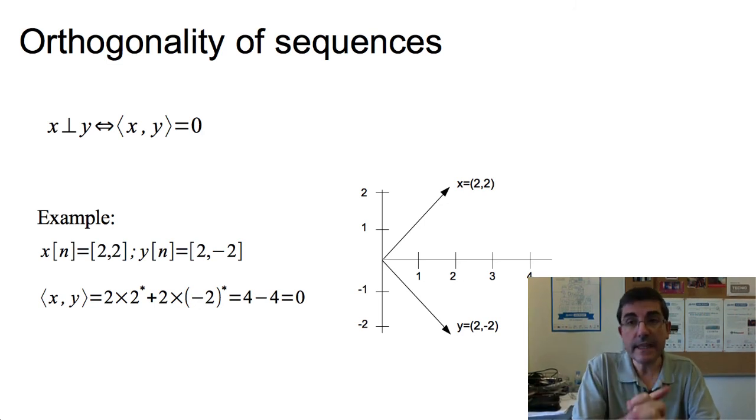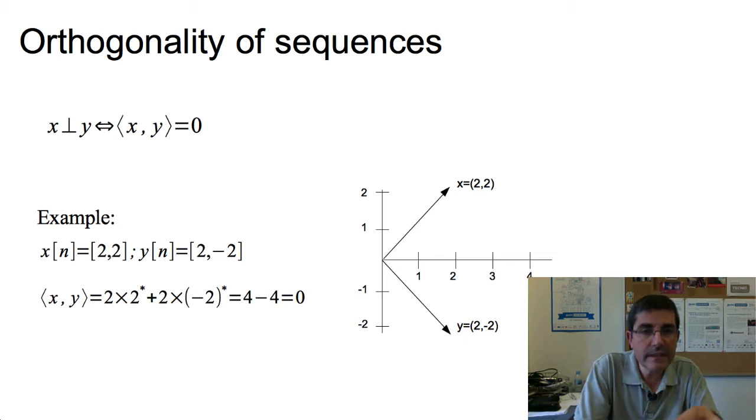An important property of the scalar product is that when two sequences are orthogonal, their scalar product is equal to zero. So, here we see this concept, x is orthogonal to y if and only if the scalar product of x times y is equal to zero. So, geometrically, the dot product can be understood as the projection of one sequence into another.